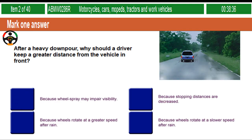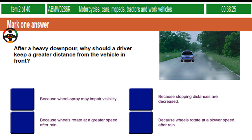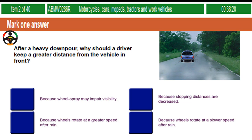After a heavy downpour, why should a driver keep a greater distance from the vehicle in front? Because wheel spray may impair visibility. Because stopping distances are decreased. Because wheels rotate at a greater speed after rain. Because wheels rotate at a slower speed after rain.